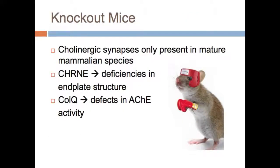Knockout mice are good model organisms to study acetylcholine receptors since cholinergic synapses are only present in mature mammalian species. CHRNE knockouts are useful to analyze deficiencies in end plate structure, and CholQ knockouts are useful to see defects in acetylcholine esterase activity.